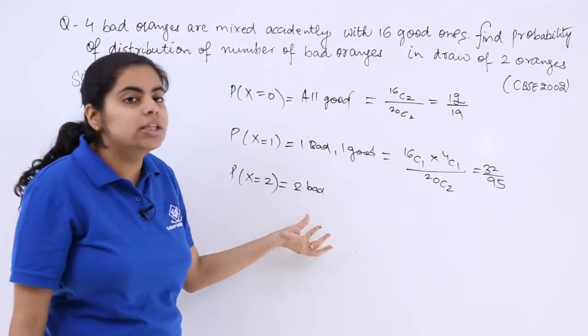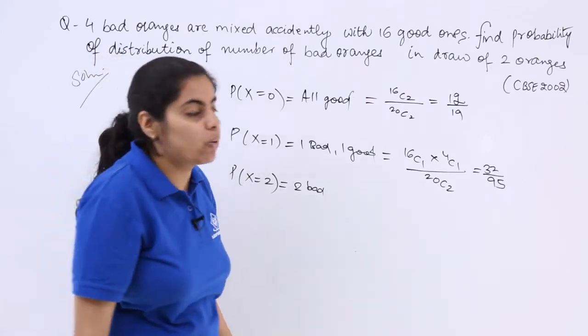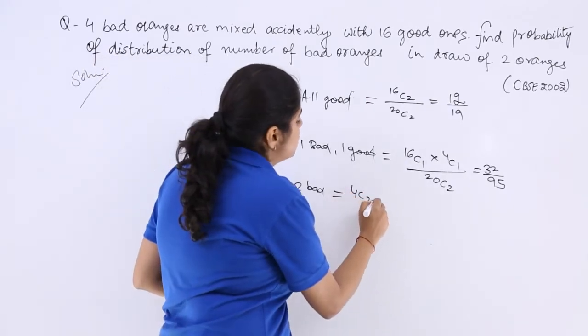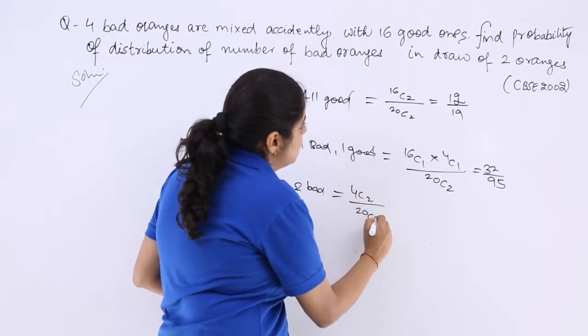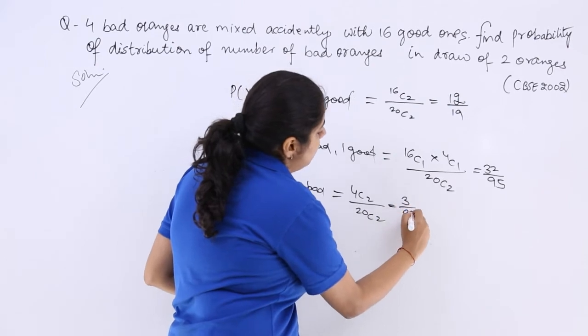Last but not the least, all the 2 that you are going to take out both of them are going to be bad, so it is 4C2 over 20C2 which is 3 over 95.